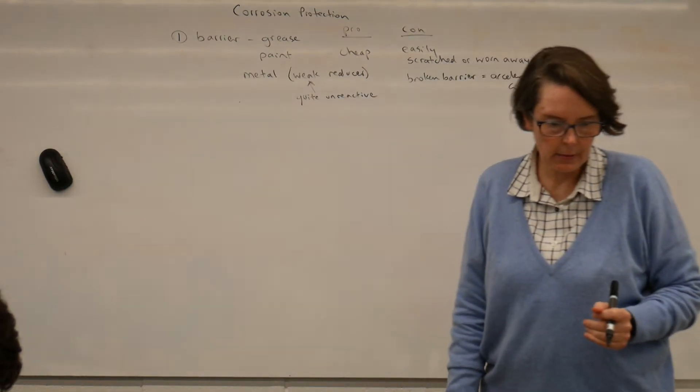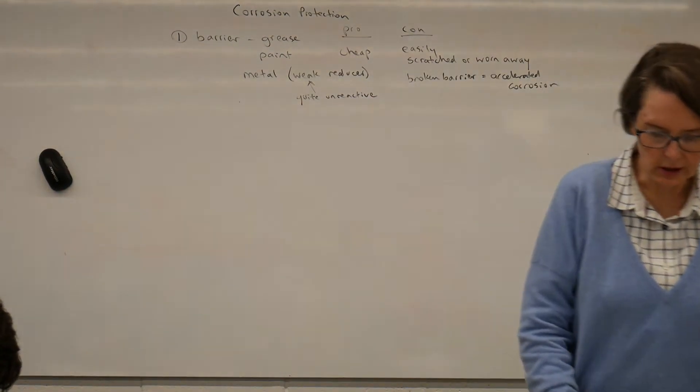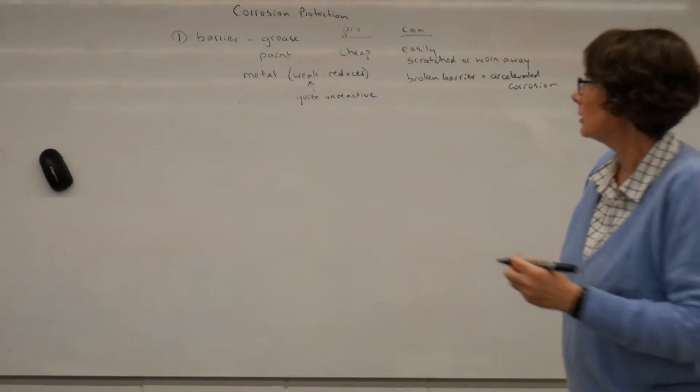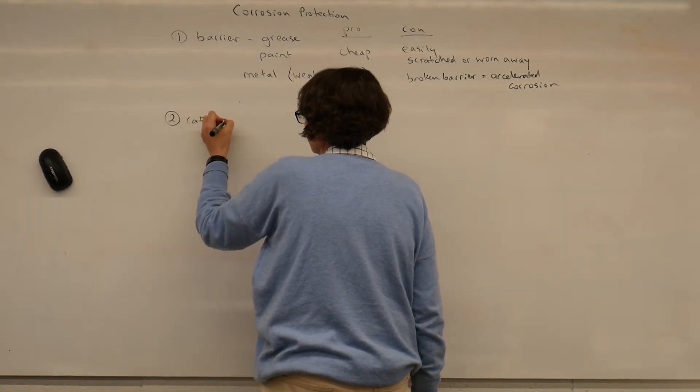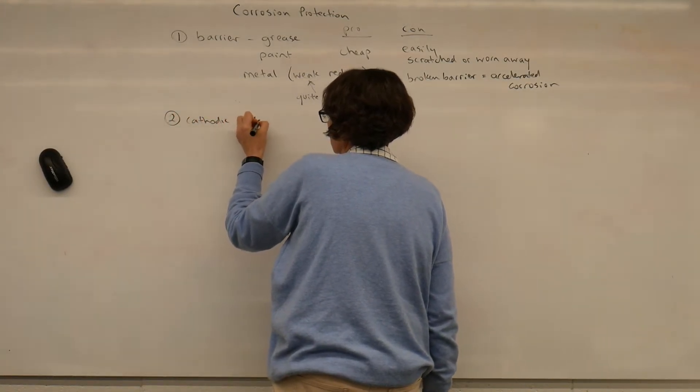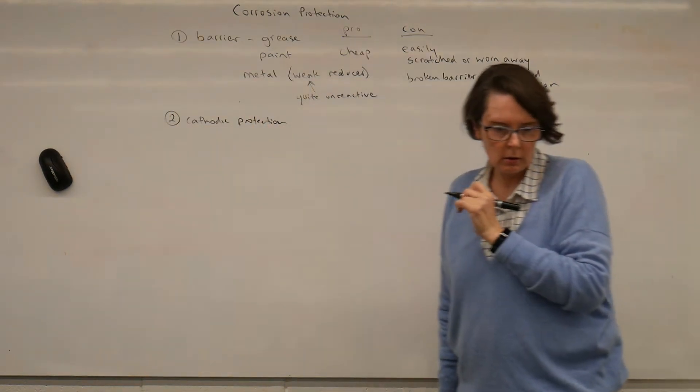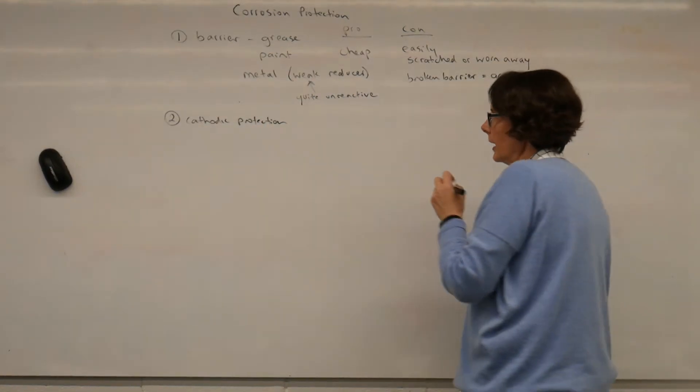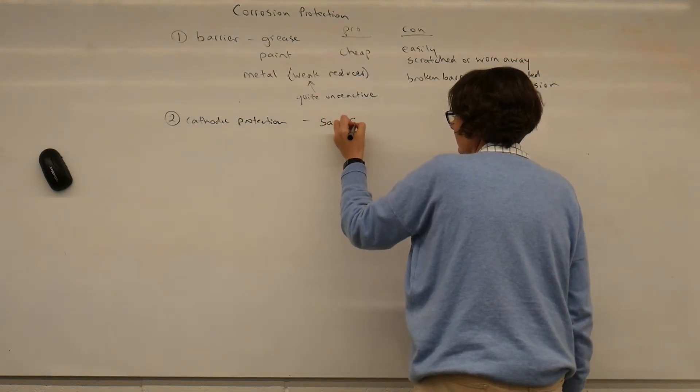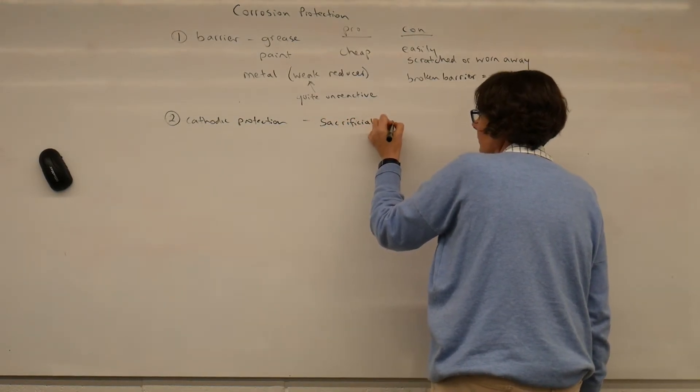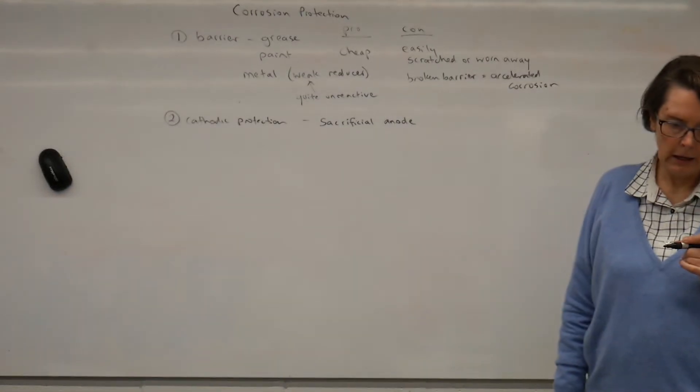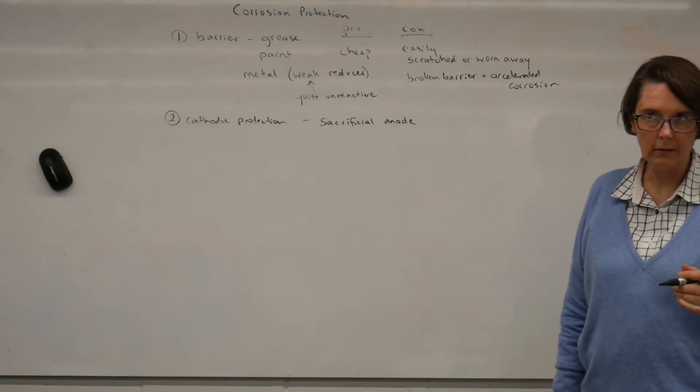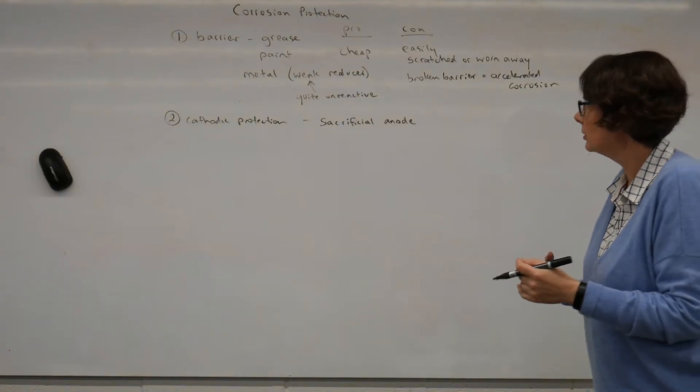Okay, so that's our barrier method, which is called surface protection in the booklets. Now we're going to look at cathodic protection and the use of a sacrificial anode. And really, we've already been looking at the chemistry of a sacrificial anode.